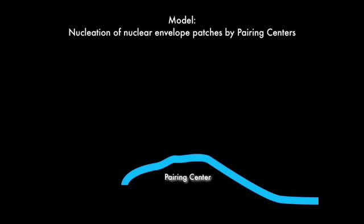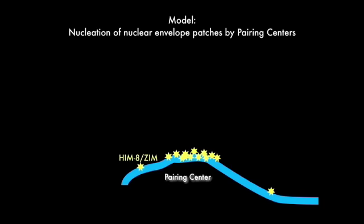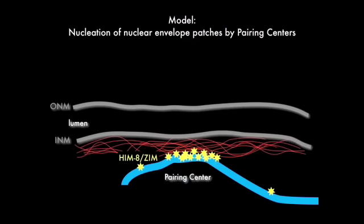Previous work on ZYG12 gave us some hints as to other proteins that might be associated with these pairing center attachment sites. And we found now that the sites where pairing centers contact the nuclear envelope are also enriched in an inner nuclear envelope protein called SUN1.